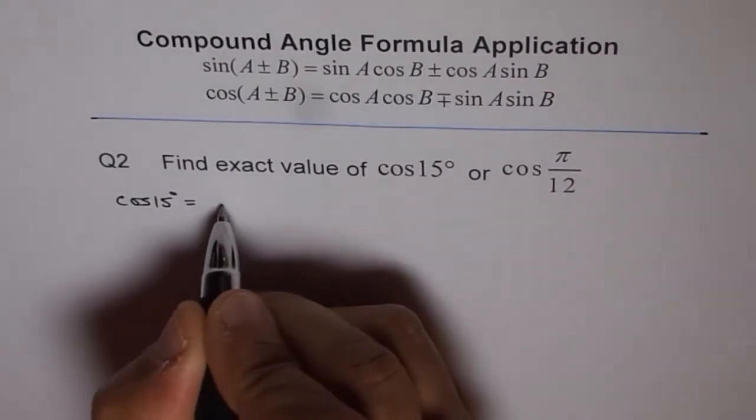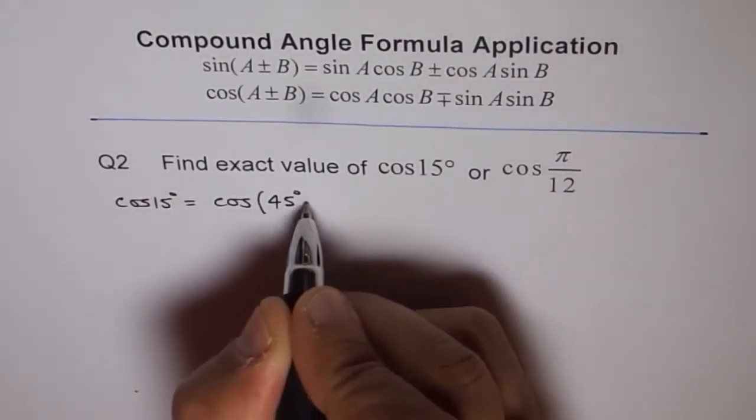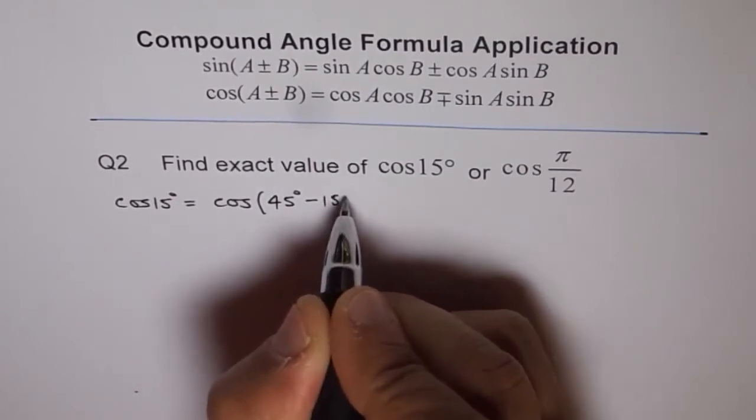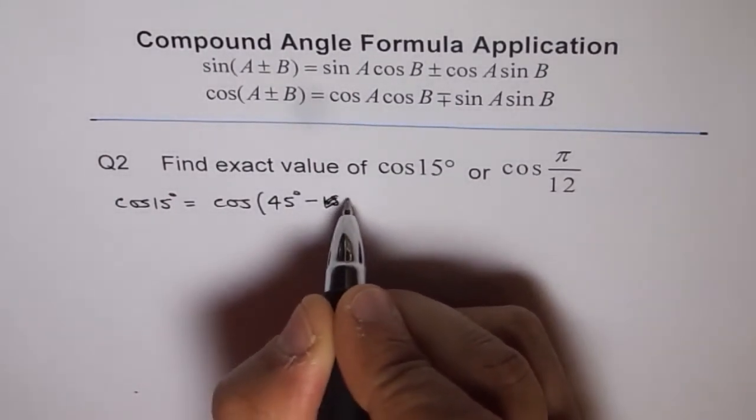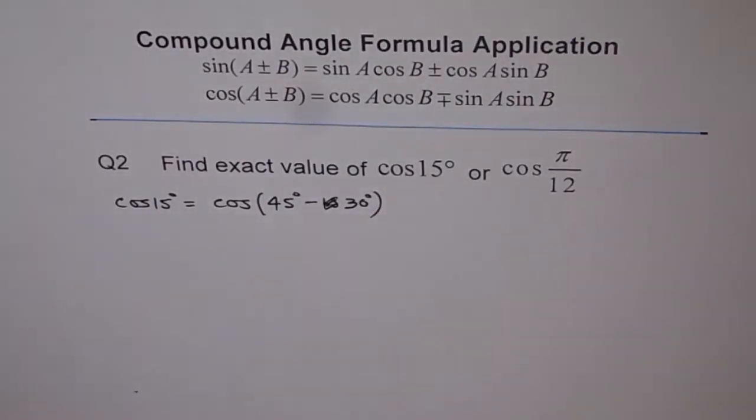And we know 45 minus 30 is 15. So we can write cos of 15 degrees as equals to cos of 45 degree minus, oh sorry, minus 30 degrees. So 45 minus 30 gives me 15.